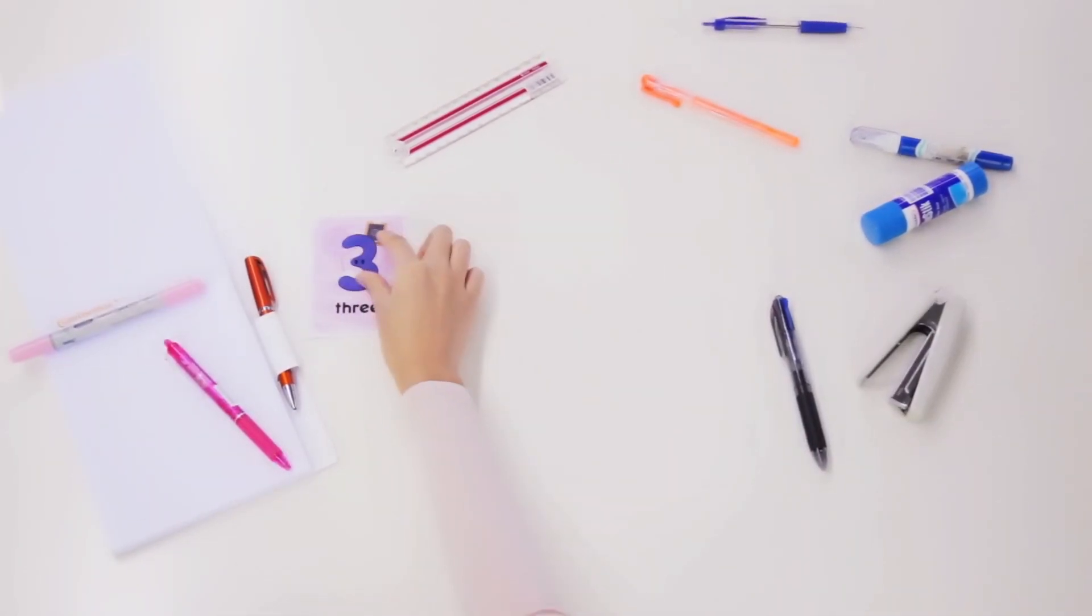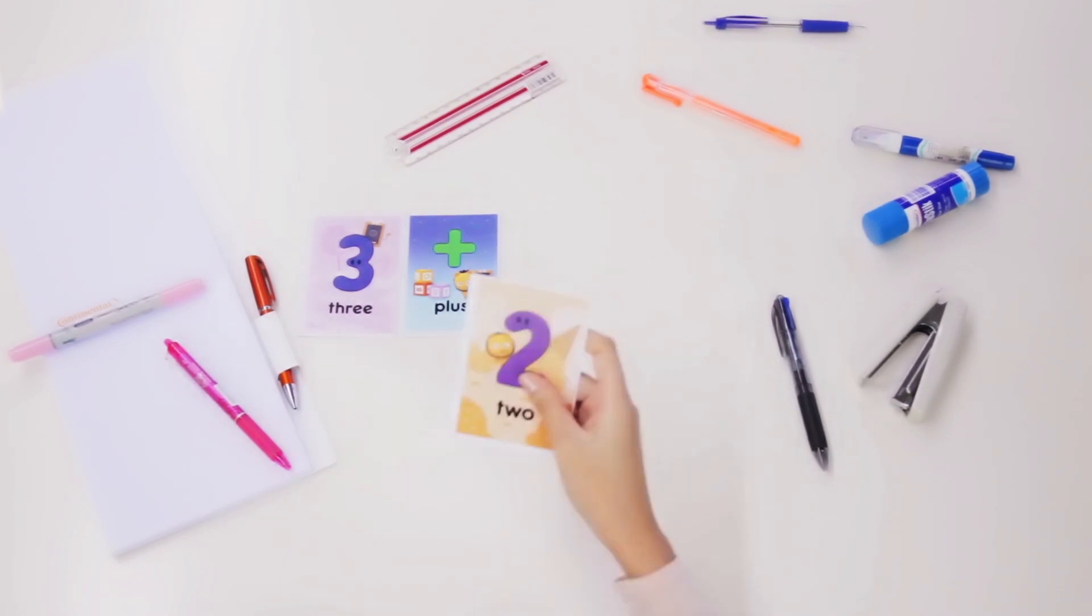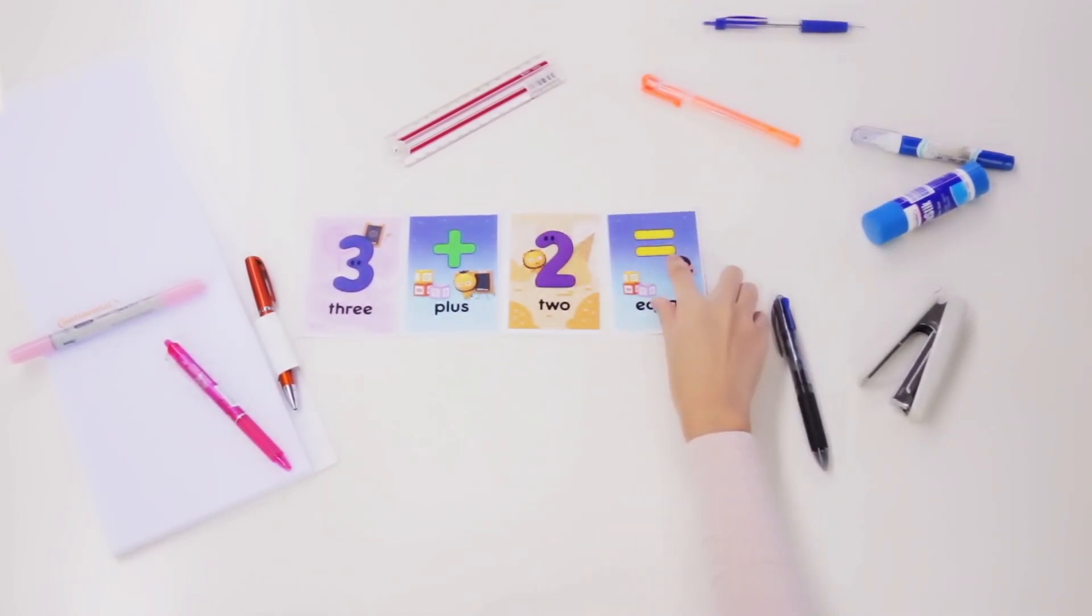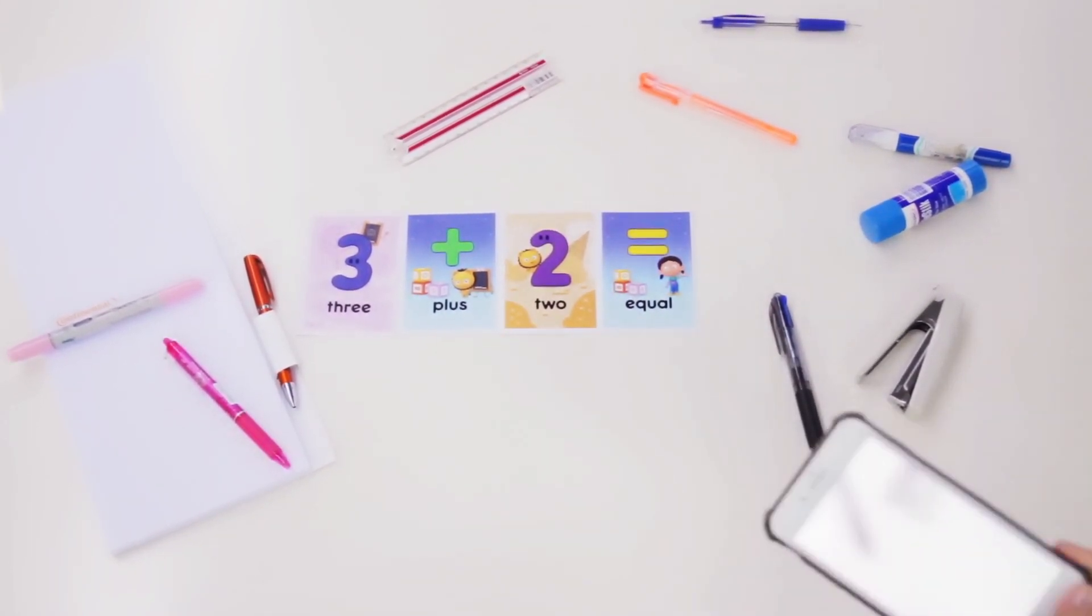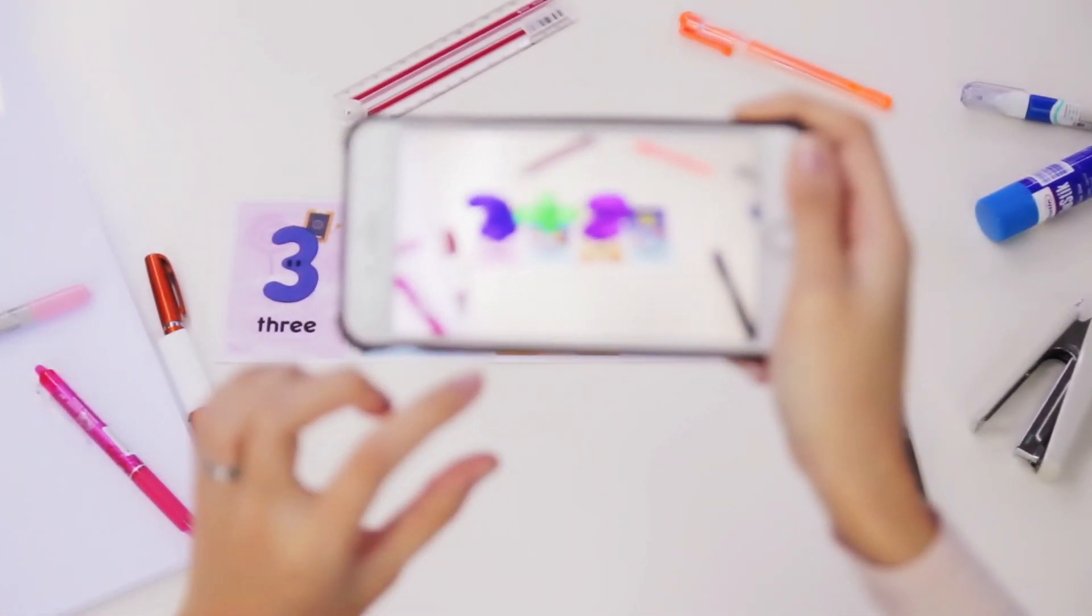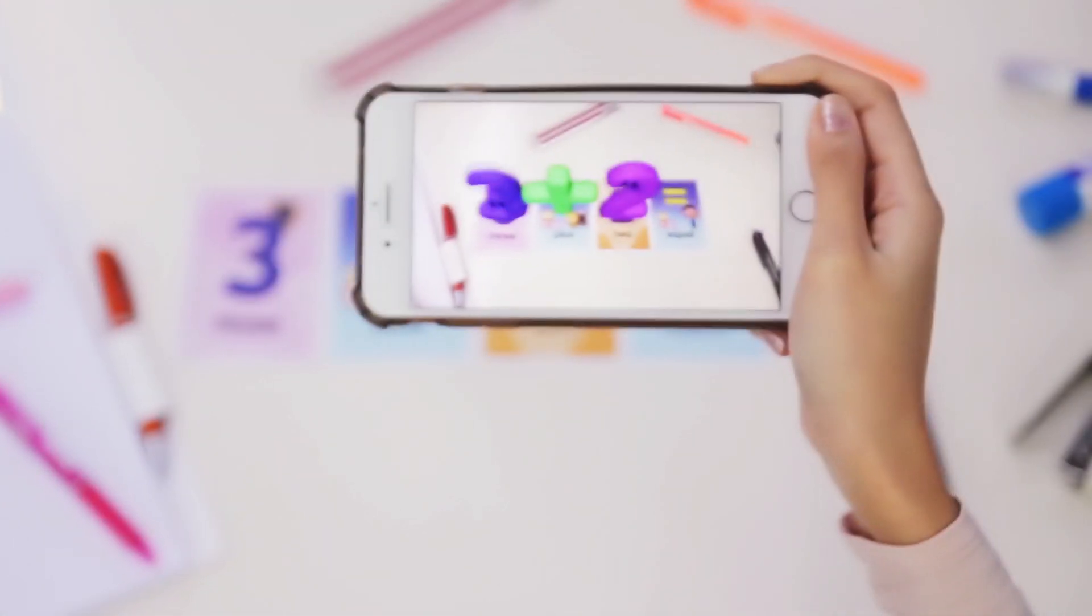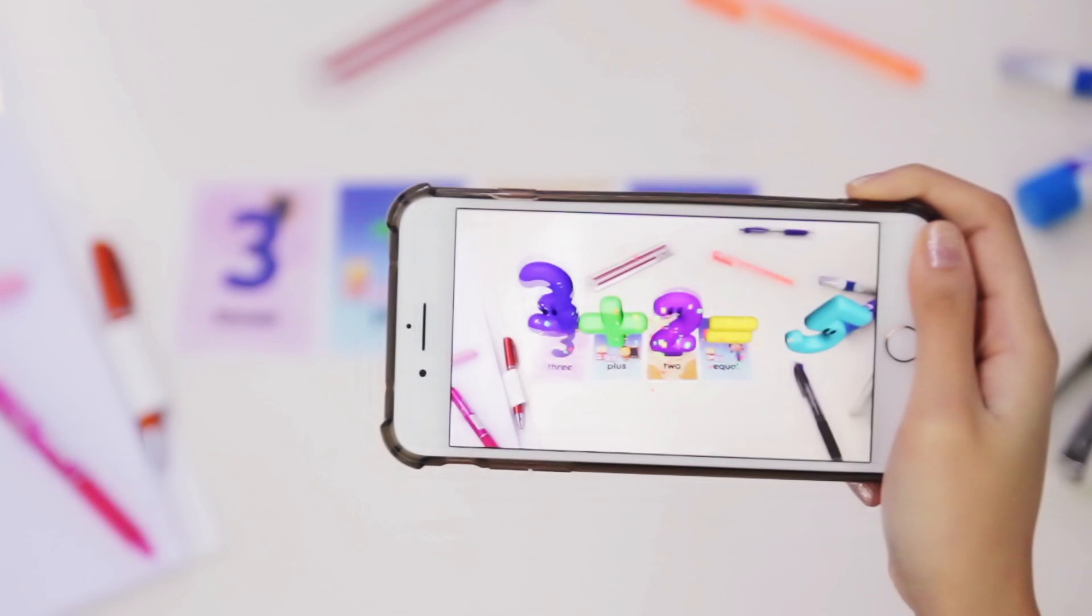All you need to do is to pick out the cards and lay them down beside each other. Next, look through the screen on your mobile device and watch them come alive right before your child's eyes. Isn't it cool?